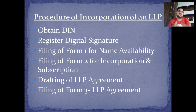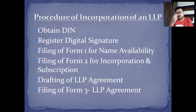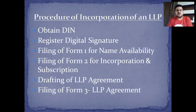What is the procedure of incorporation of an LLP? First, you need to obtain a Director's Identification Number (DIN). After that, register a digital signature — you need an online digital signature. Then file Form 1 for name availability to check whether your chosen name is available. File Form 2 for incorporation and subscription to check whether registration can be done. Then draft an LLP agreement covering terms such as number of partners, sharing ratio, and capital ratio. Finally, file Form 3 as the final LLP agreement.